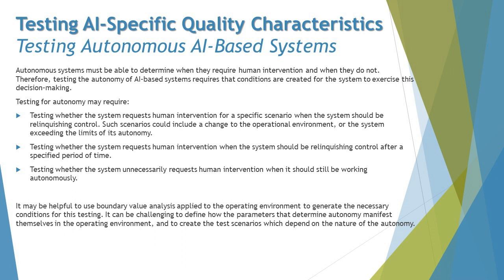Taking a simple example: the cruise control of a car is designed to drive at a constant speed regardless of whether roads are downhill or uphill. But as soon as a human wants to take over, they apply the brake and cruise control is disengaged, allowing the human to retake control whenever they want.